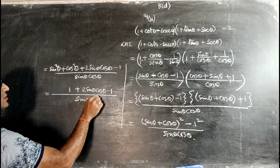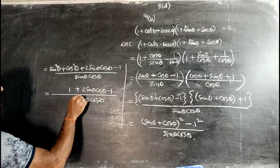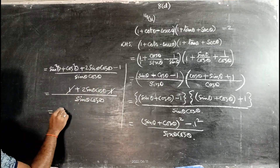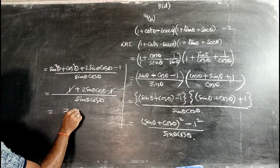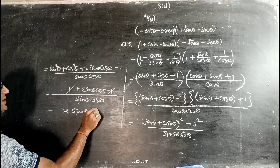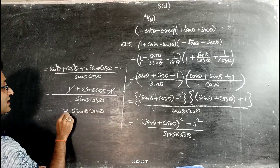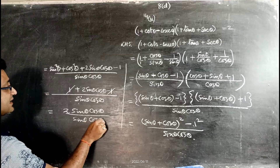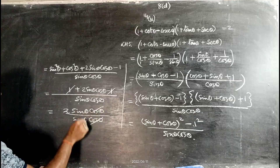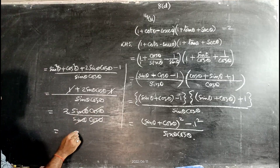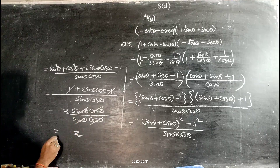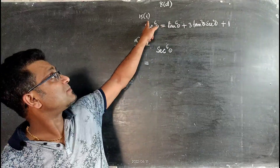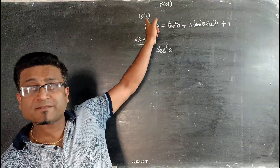Since sin²θ + cos²θ = 1, we have 1 + 2sinθcosθ - 1 divided by sinθcosθ. The +1 and -1 cancel, leaving 2sinθcosθ divided by sinθcosθ. The sinθ and cosθ cancel, giving a net result of 2, which is the required right hand side.